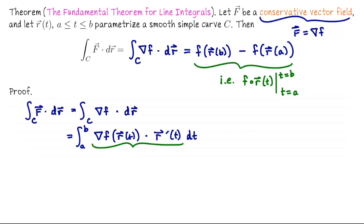I claim this integrand can be rewritten in a really convenient way. Notice it's the gradient of f evaluated on r, dot r prime. You've seen this exact dot product in a previous unit — we saw this when we talked about the chain rule. If you're evaluating a scalar valued function along a parametric curve, doing the composition f of r, and you want to take the derivative of that composition, it's the gradient of f evaluated on r(t) dot r prime(t). So here we're going to undo that chain rule.